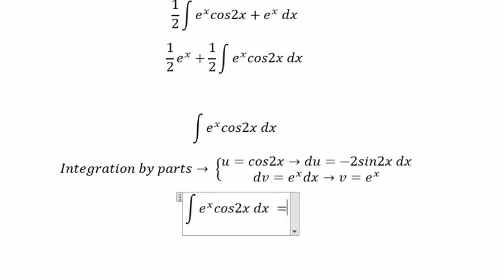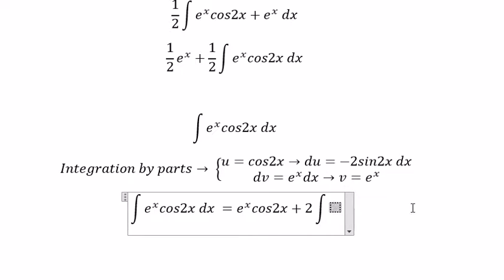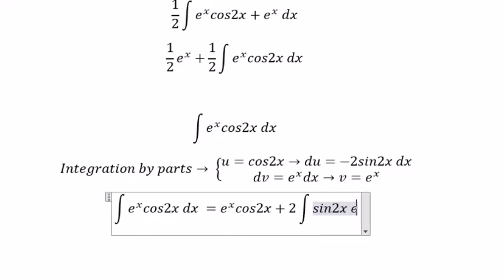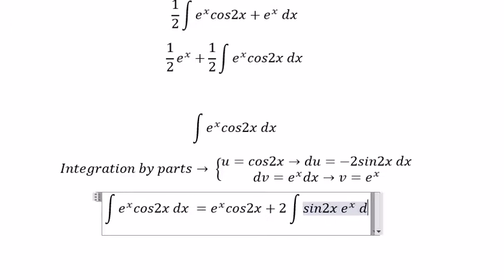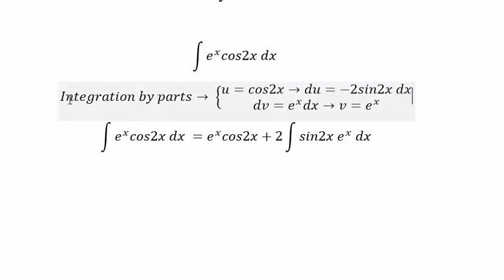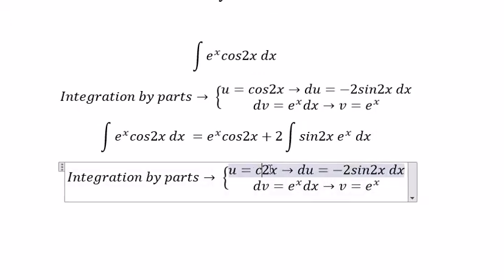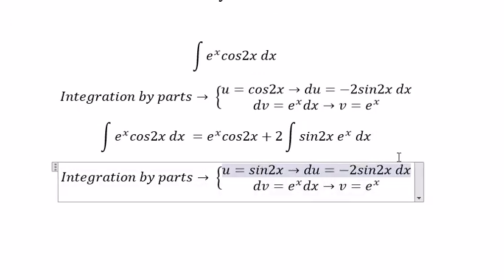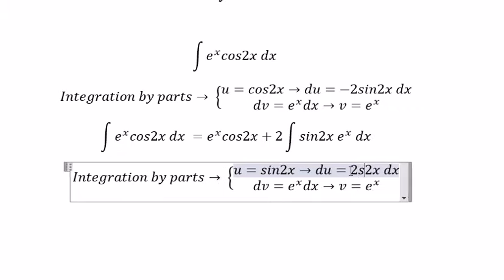So we have u times v. Because we have the negative of number 2, we got a positive number 2 in the integral. Next we will have sine 2x, so this one is e to the power of x cosine 2x.